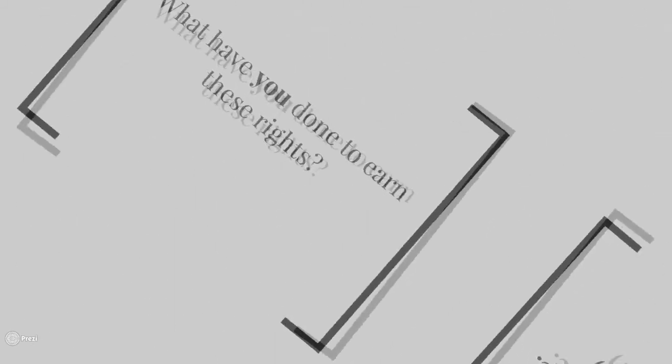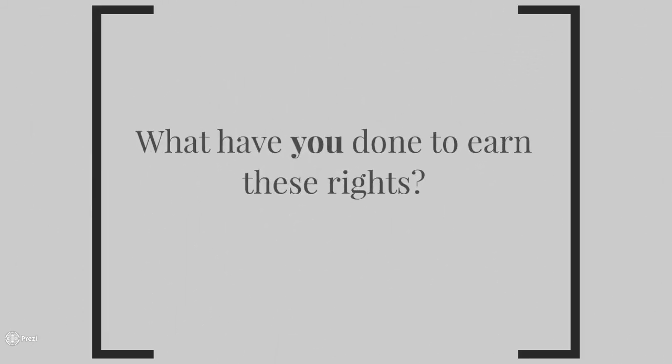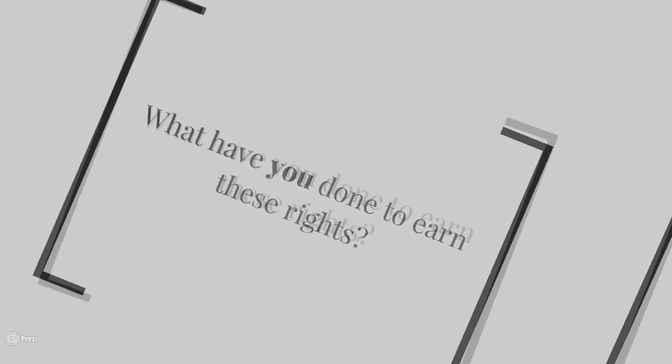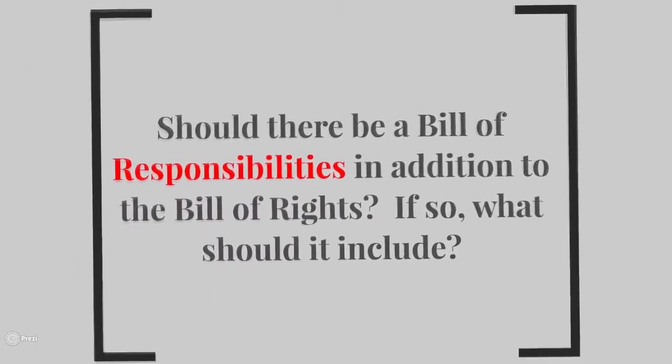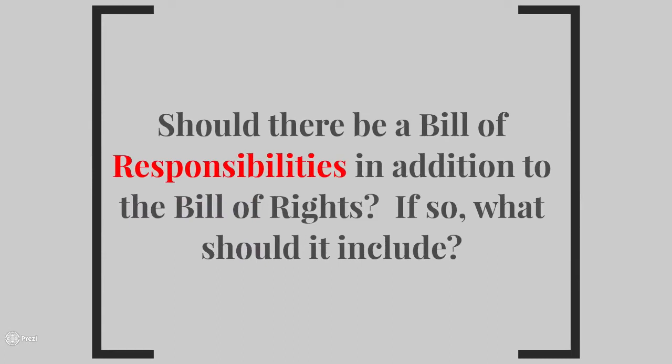The next question is asking you: what have you done to earn these rights? This relates back to Unit 1 — that citizenship and community stuff is not going away anytime soon. Did you do something in order to make sure that you obtained your Bill of Rights, outside of just being born here? Have you done anything? That feeds directly into the last question: should there be a Bill of Responsibilities in addition to the Bill of Rights, and if so, what should that include?